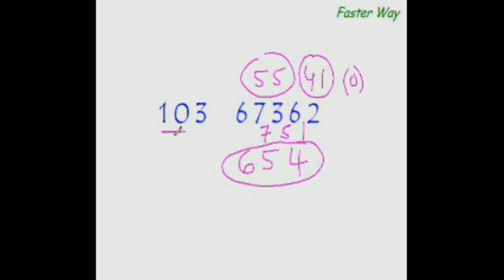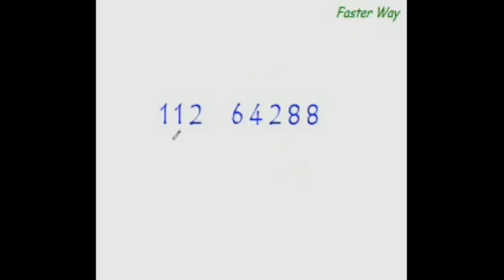Now let's see more examples. Once again, you break this divisor as 11 and 2 — take 11 as your main divisor and 2 as your unused digit. As I always say, you must know multiplication tables up to 20; this is the basic tool of every mathematician. If you know the table of 11, you can easily solve this. So 11 goes into 64 five times — 11 times 5 is 55 — and the remainder is 9.